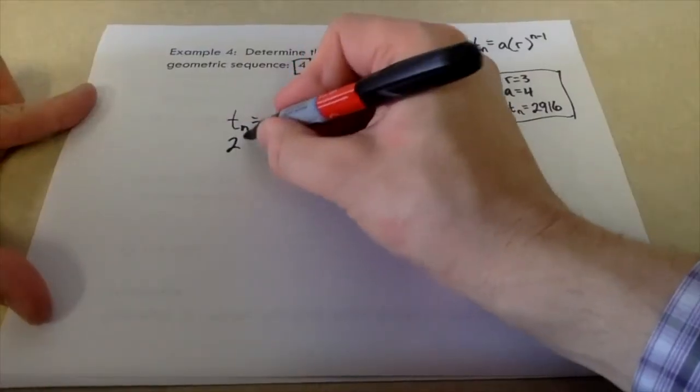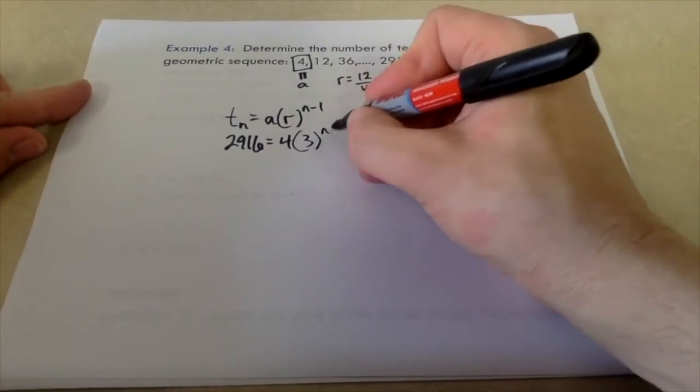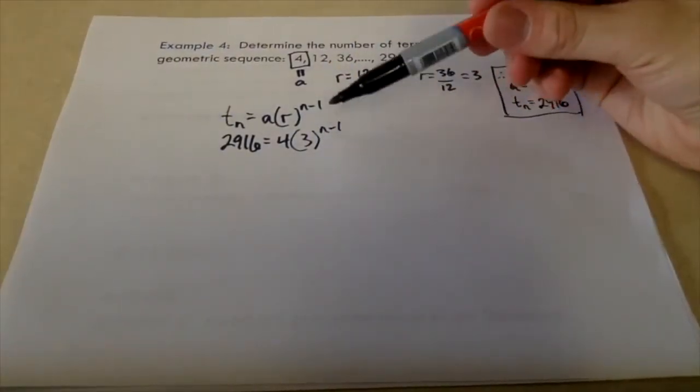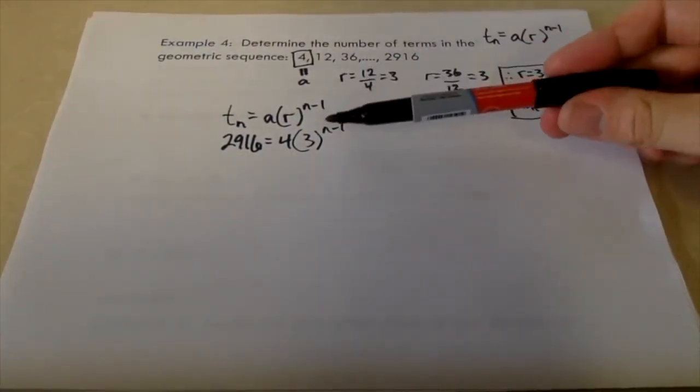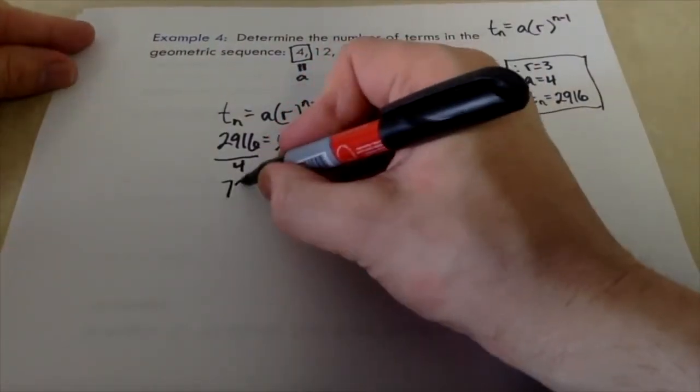So tn is 2,916. A is 4, r is 3. And we've got our n minus 1. So remember, our goal here is to solve for n. What we want to do here is get rid of this 4. We want to divide this out. So doing that, we get 729. We still got 3 to the power of n minus 1.